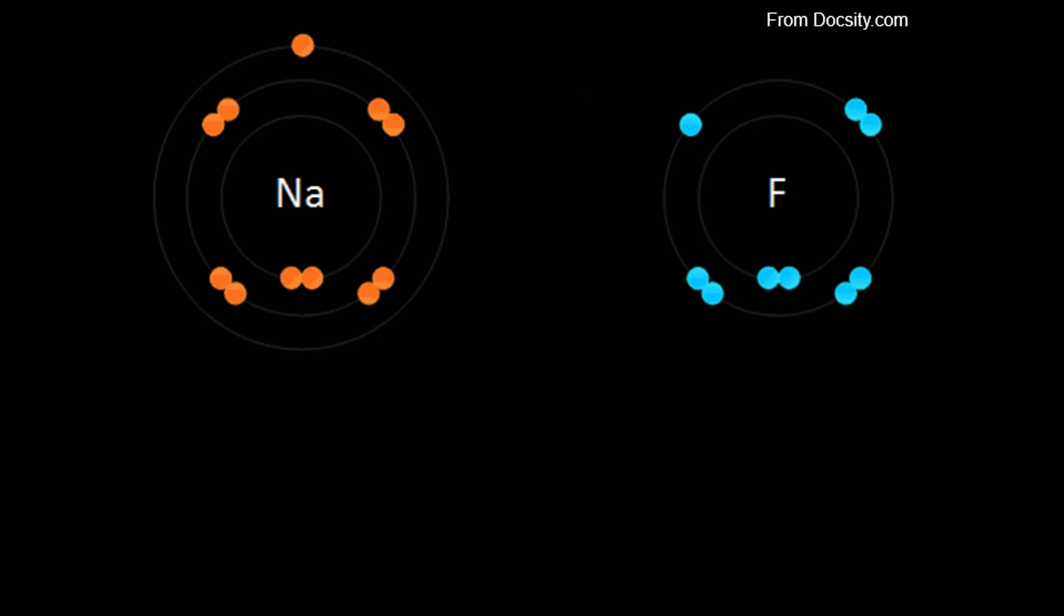As you can see, sodium has 1 valence electron in its outermost energy level, while fluorine has 7.